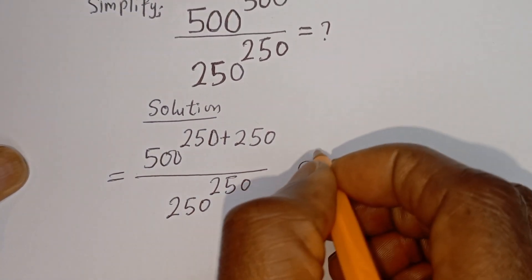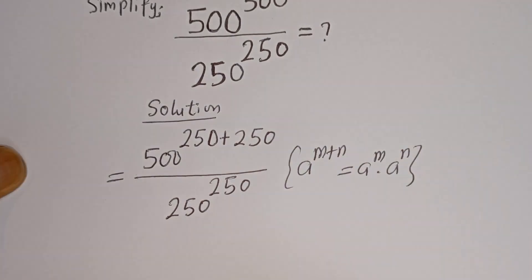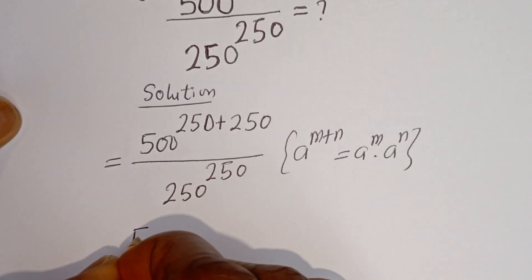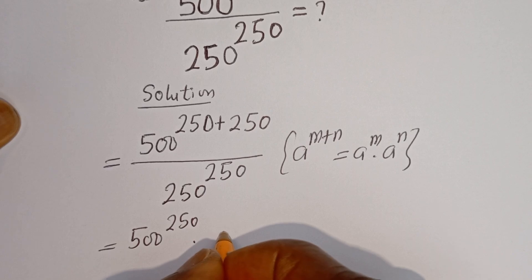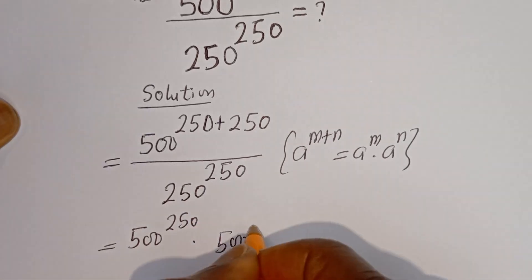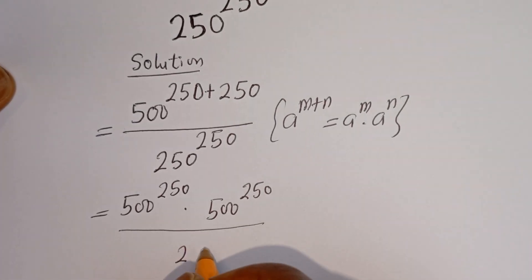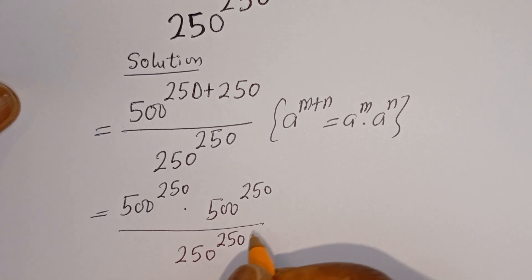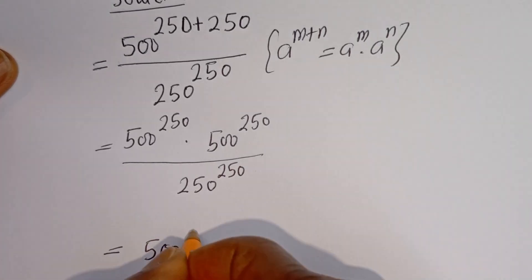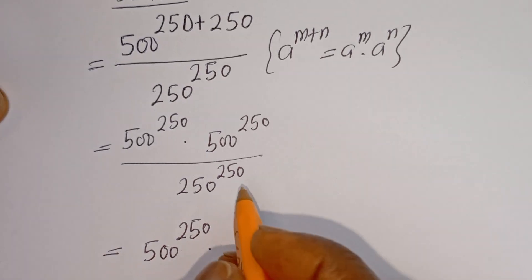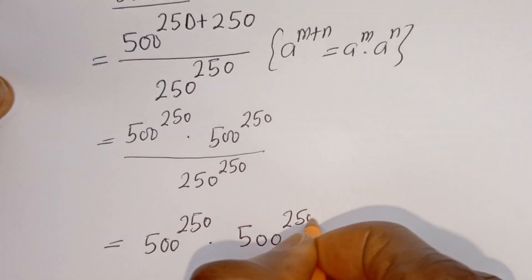Take note that if you have a to the power of m plus n, this is equal to a to the power of m multiplied by a to the power of n. So this can be written as 500 to the power of 250 multiplied by 500 to the power of 250, everything over 250 to the power of 250. This can further be written as 500 to the power of 250 multiplied by 500 to the power of 250 over 250 to the power of 250.